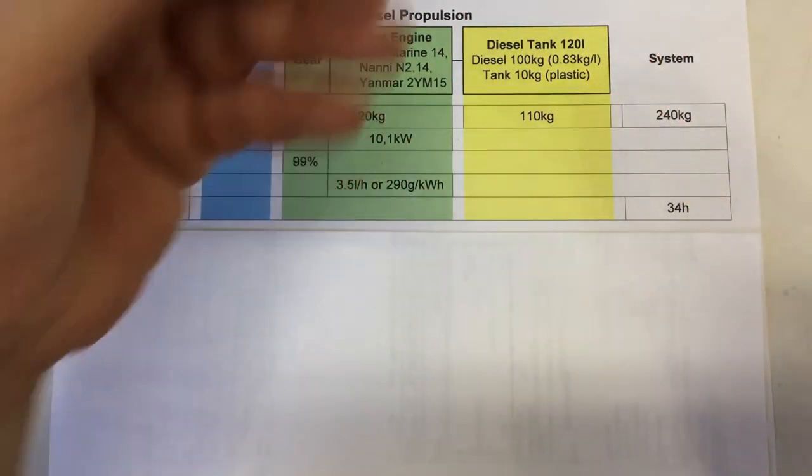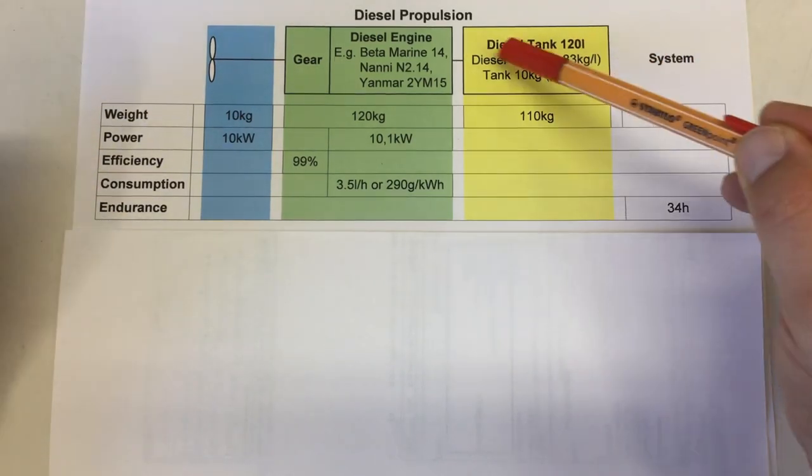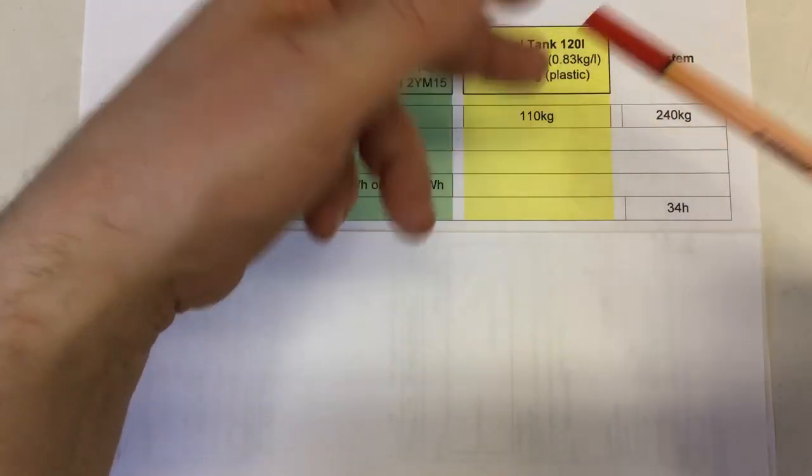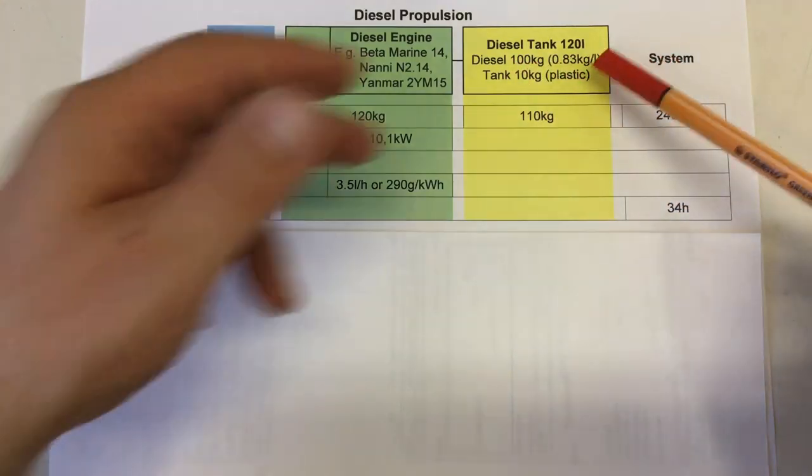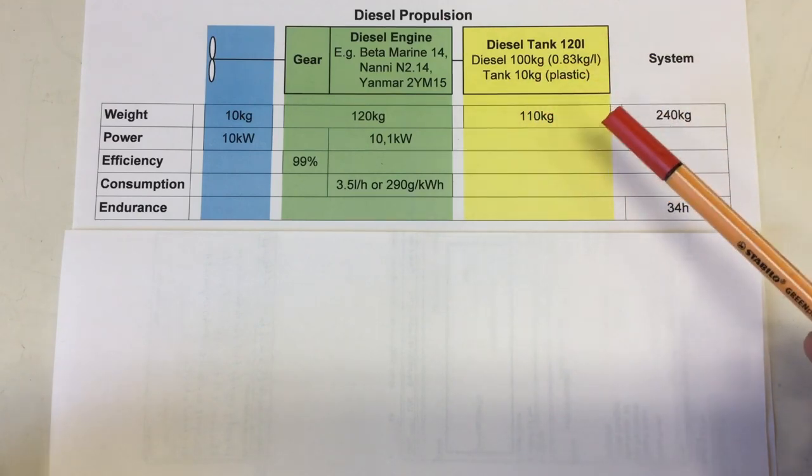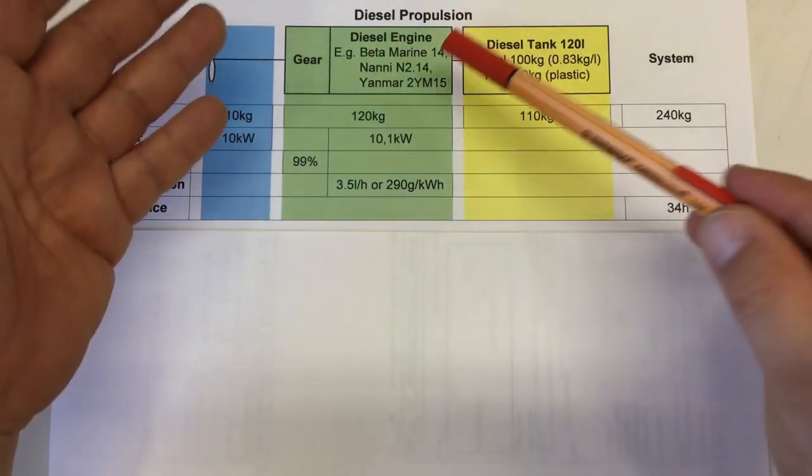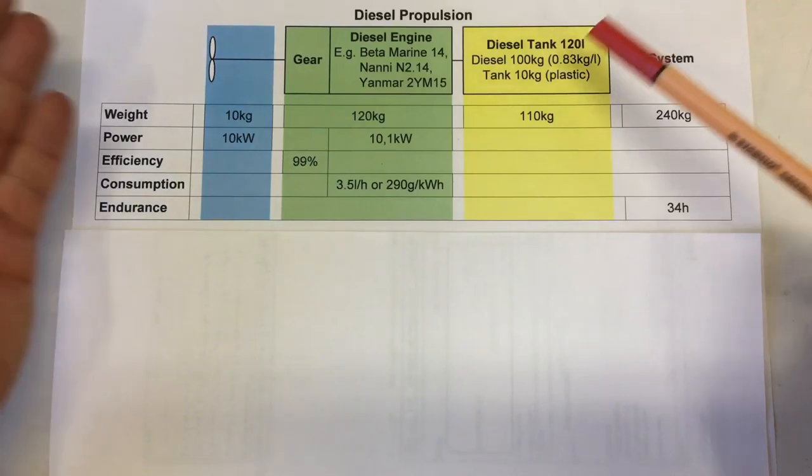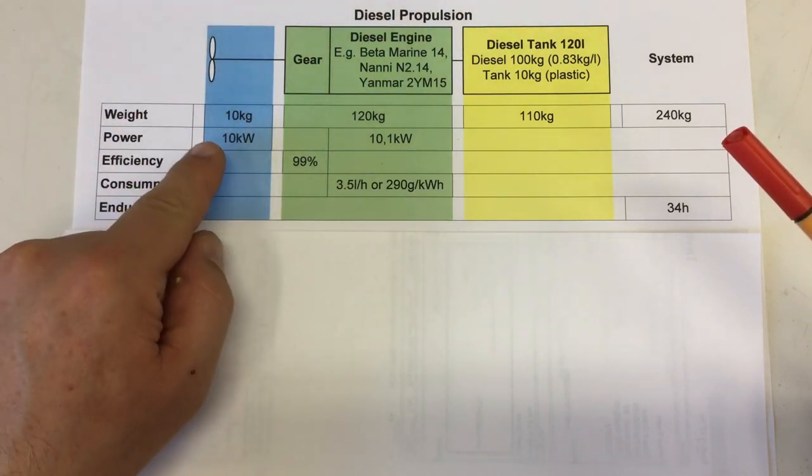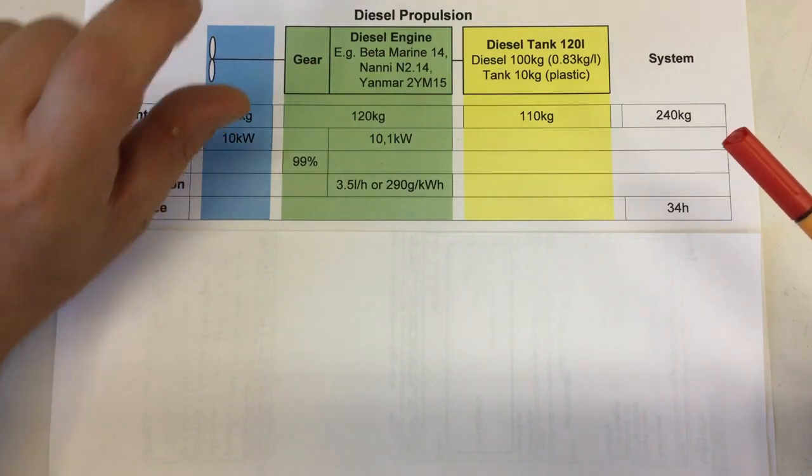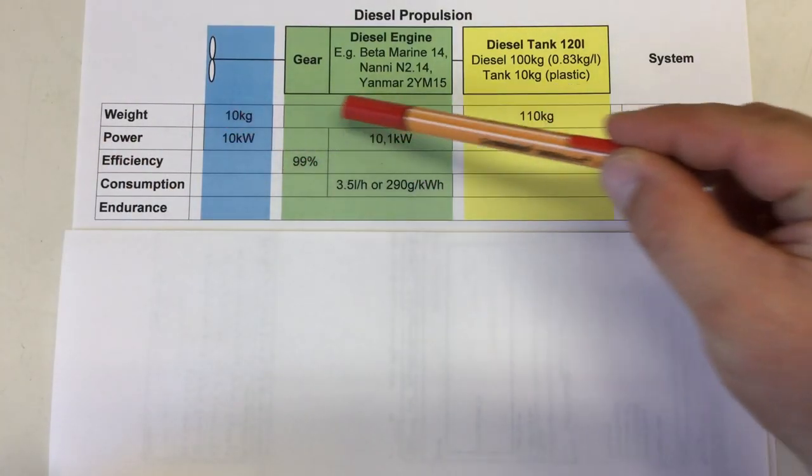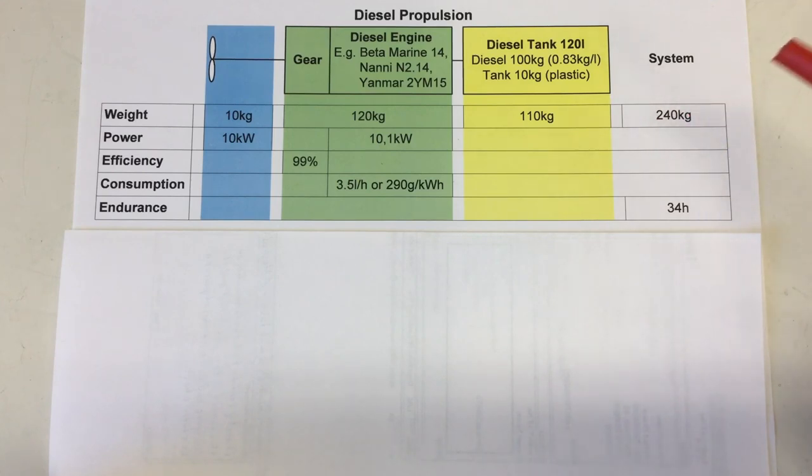We need a diesel tank. In our example, 120 liters holding 100 kilograms of diesel fuel. The tank itself has some weight, 10 kilograms if it's made out of plastic, so we have a total weight of 110 kilograms. The diesel engines here, on average, with the gear and oil and everything, come to 120 kilograms. The shaft and the prop also has some weight. Small shaft, 25 millimeter diameter, half a meter long. Small prop, maybe 10 kilograms. That gives us a total system weight of 240 kilograms.